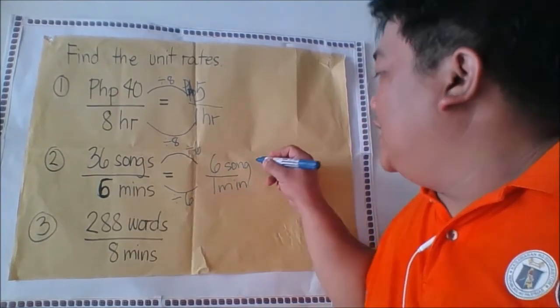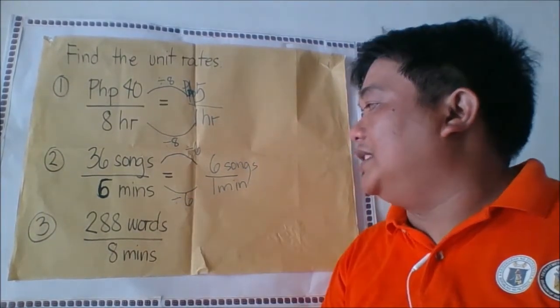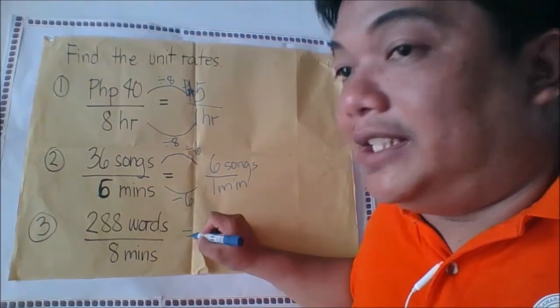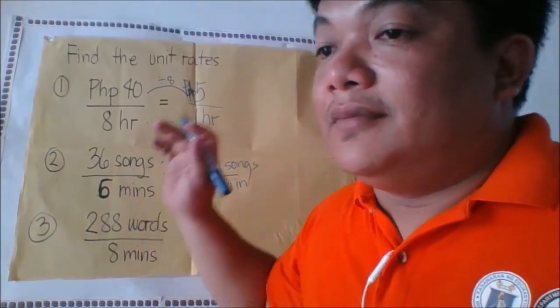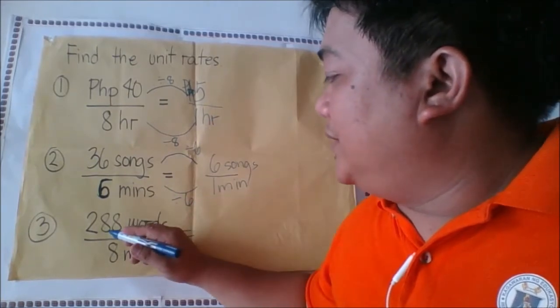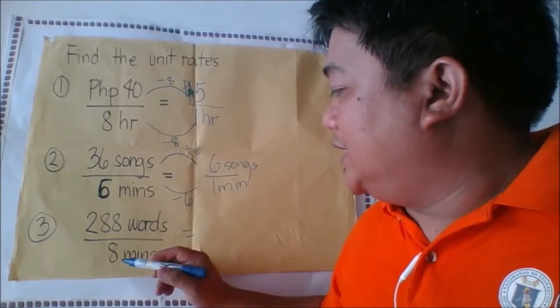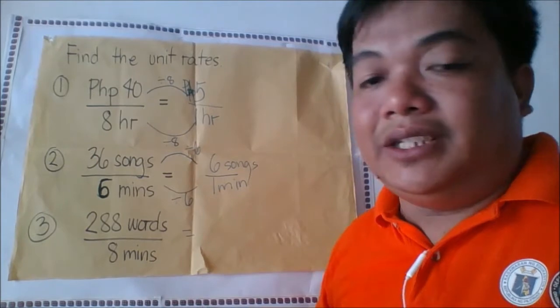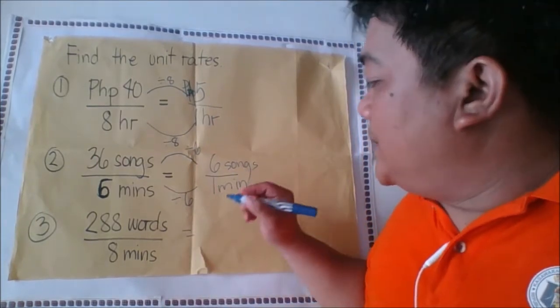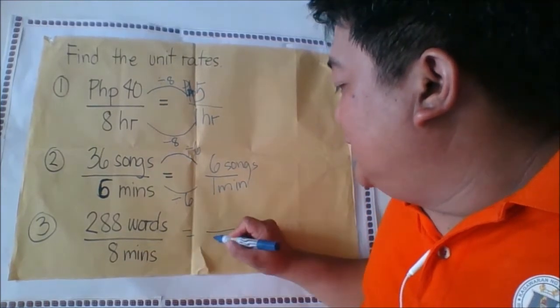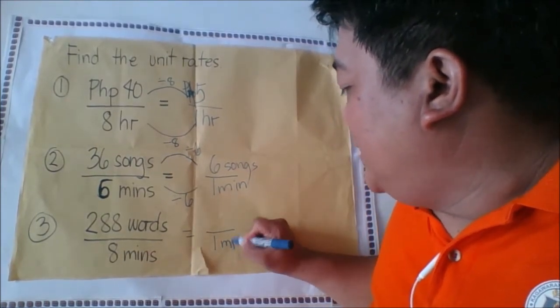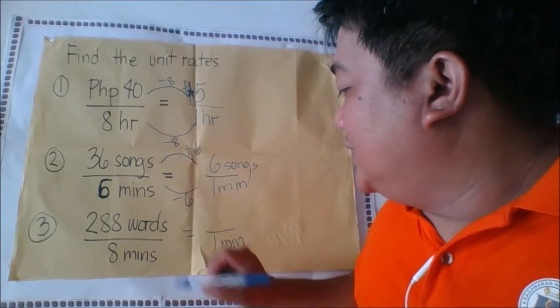For this one, 288 words to 8 minutes. Let us equate again to 1 minute. How did you find one minute? Simply divide it by 8.